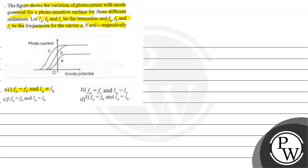Option A says: FA equals FB and Ia is not equals to Ib. Option B says: FA equals FC and Ia equals Ic. Option C says: FA equals FB and Ia equals Ib. Option D says: FA equals FB and Ia equals Ib.